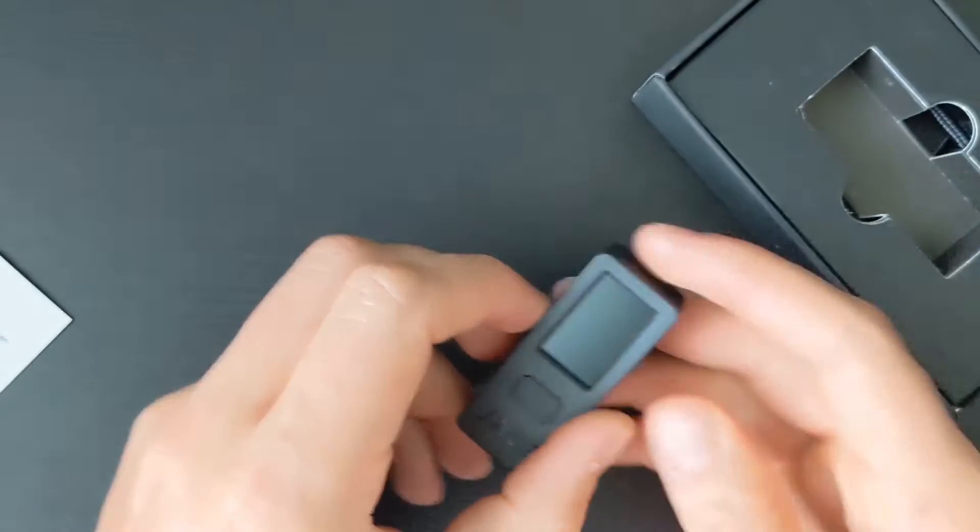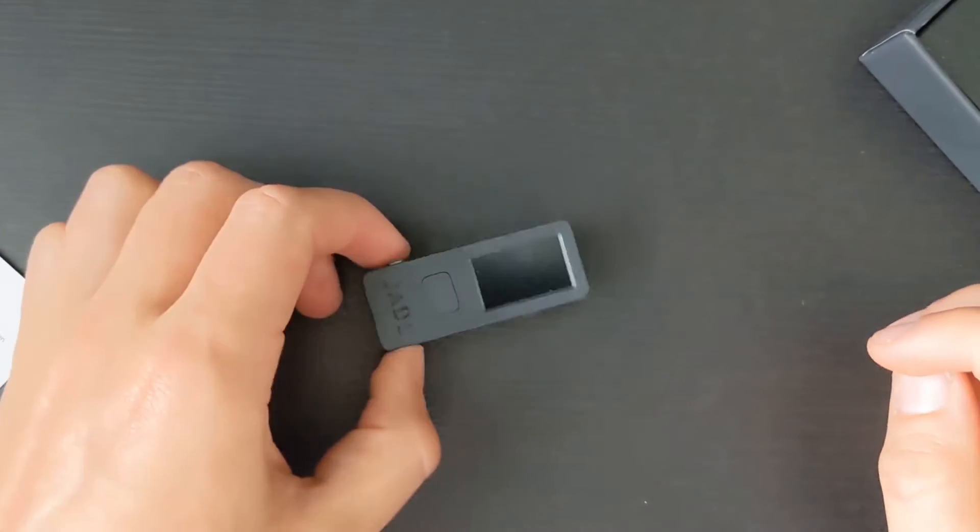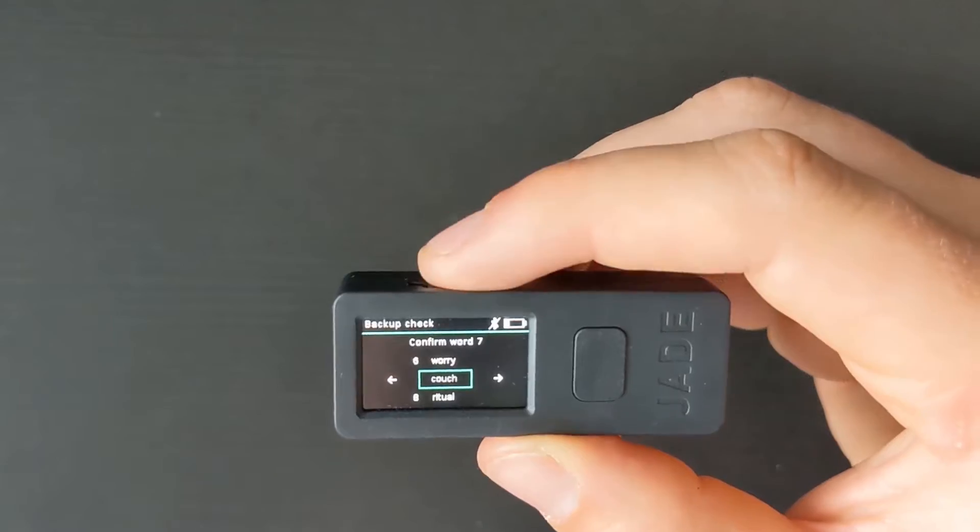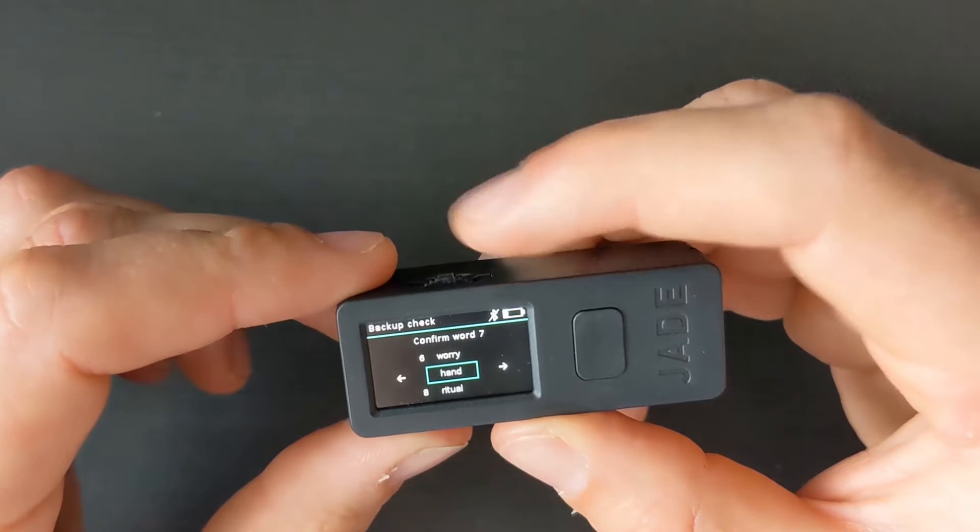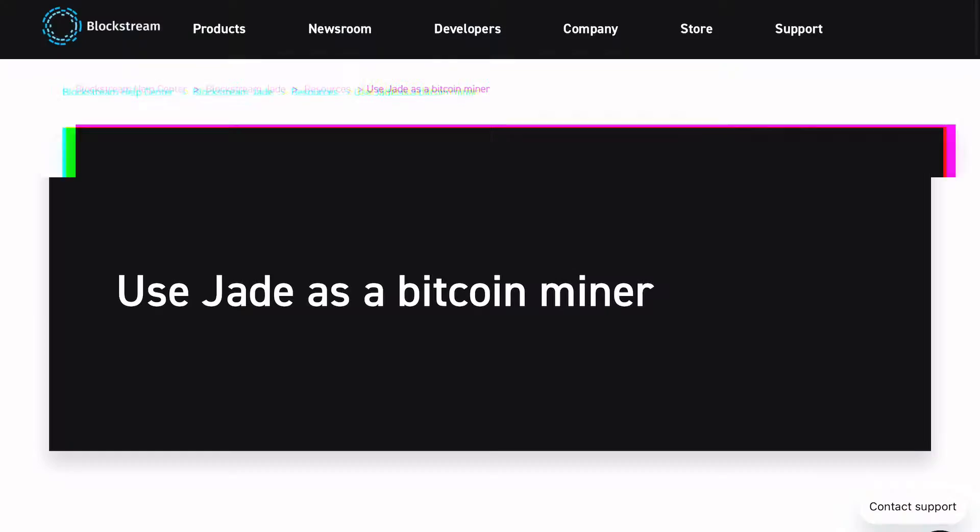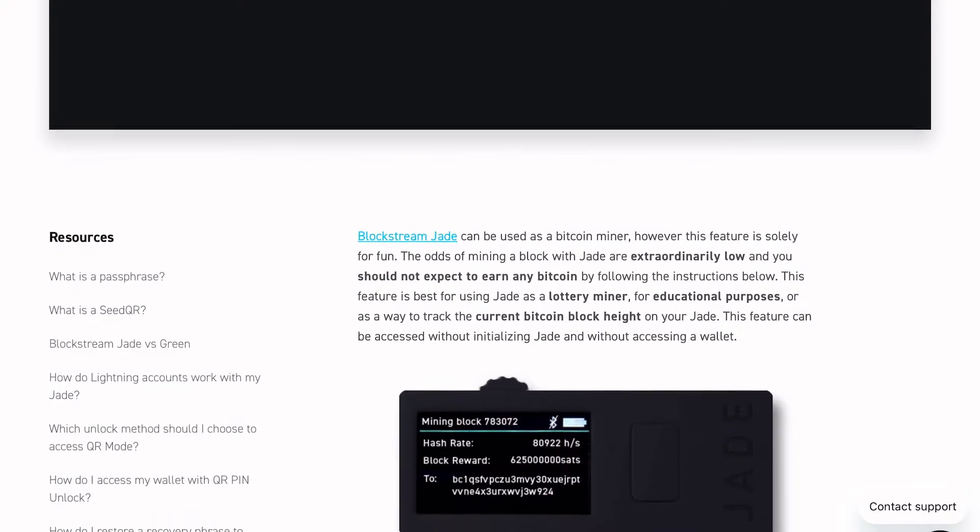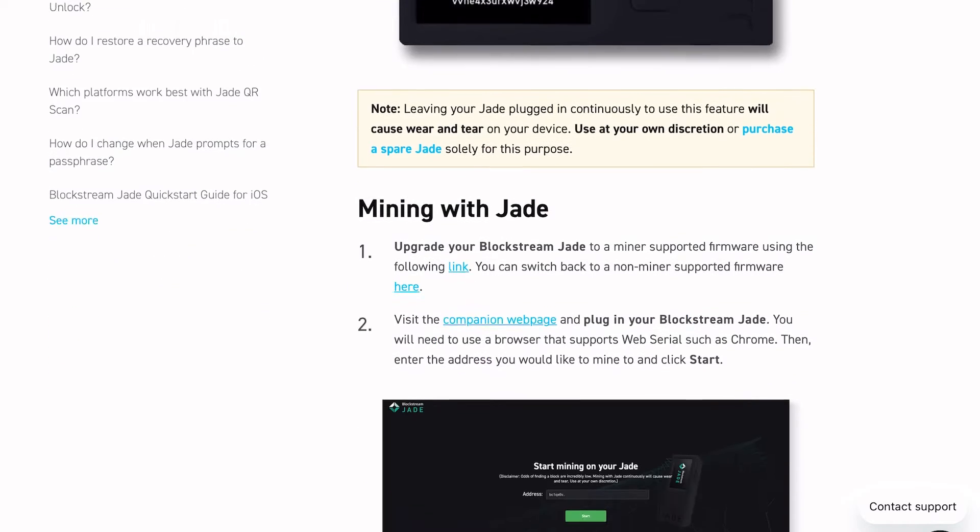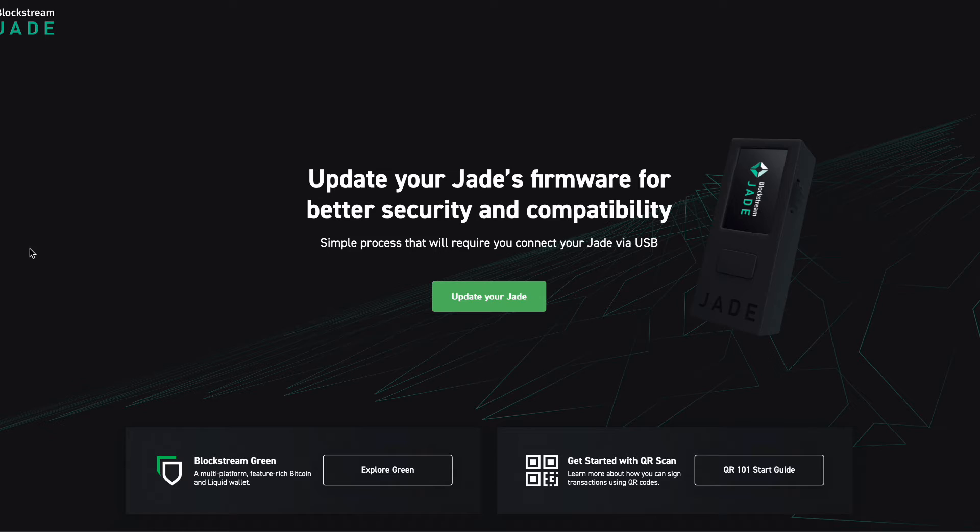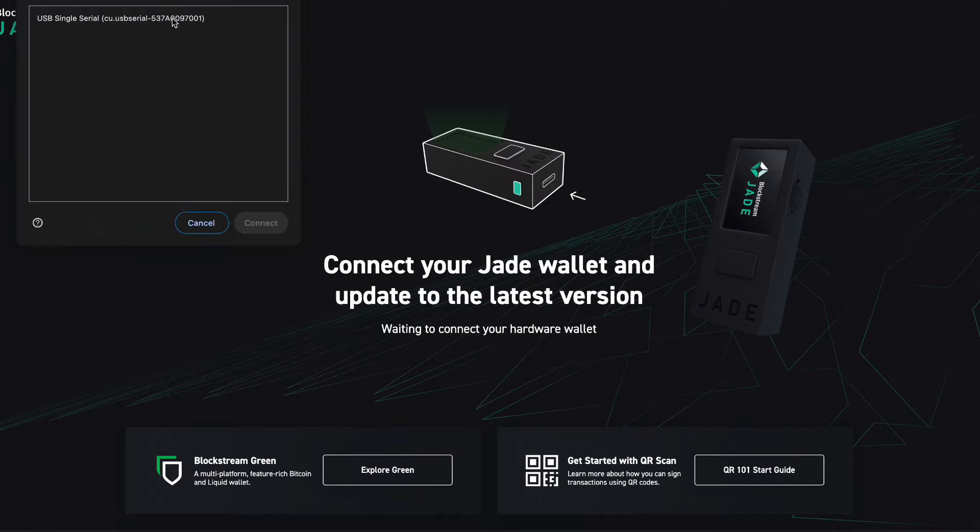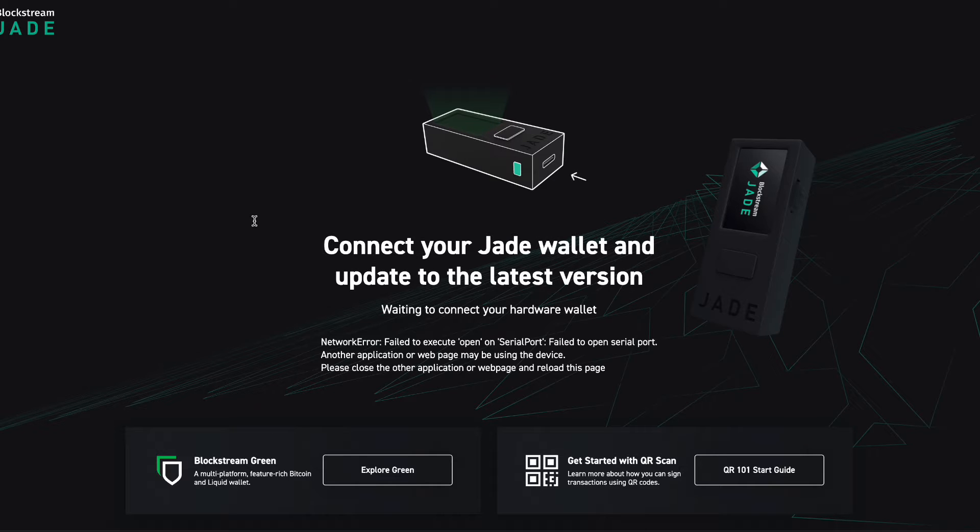So when you first get your Jade you're going to have to unbox it and set it up as normal. I have a full tutorial on how to set up the Blockstream Jade if you don't know how to do so already. Once it's set up we're going to head to this link on the Blockstream help page to download the firmware and update it in our device. So what we're going to be doing is plugging this into a computer. This is going to lose what's called its air gap. So again, if you're using it to store your Bitcoin that way, definitely recommend purchasing a whole new device if you want to mine with this.